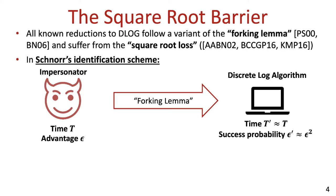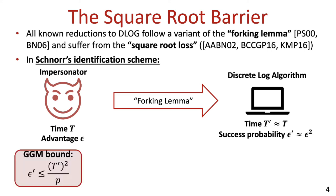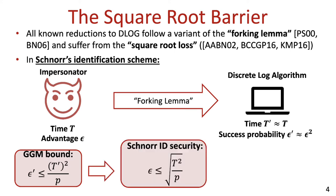So what does this tell us about the security of the Schnorr ID scheme? Shoup's bound on the hardness of the discrete logarithm problem in the generic group model tells us that epsilon prime is at most t prime squared over p, where p is the size of the group. So if we work in a group in which this bound is assumed to hold, such as some elliptic curve groups, the forking lemma implies that the advantage epsilon of the impersonator is at most the square root of t squared over p. This is potentially a much greater bound than the advantage of the best-known attack on the Schnorr ID scheme, which is by discrete-log computation and succeeds with probability roughly t squared over p.